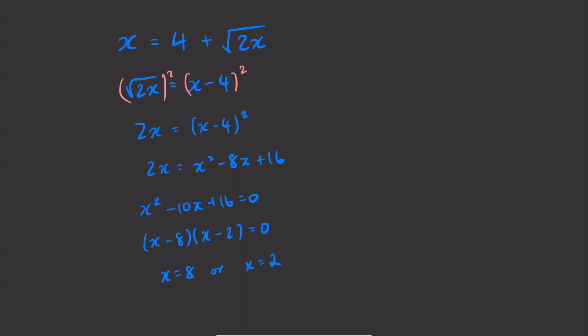And this is where we need to do the checking, because if we check with our original equation up here, one of these solutions is not valid. So let's say if x equals 8, let's plug that in. We get on the left hand side x is just equal to 8. On the right hand side we get 4 plus the square root of 2 times 8. This is equal to 4 plus the square root of 16, which is equal to 8. So this is a valid solution.